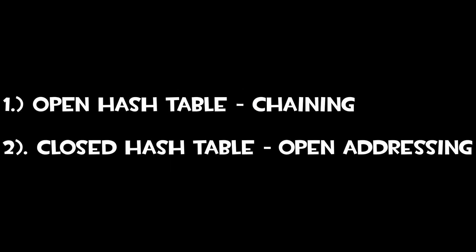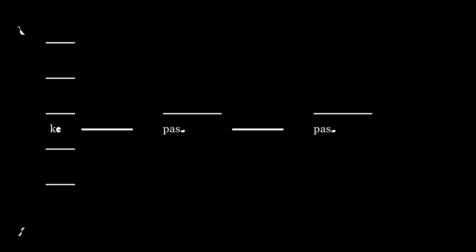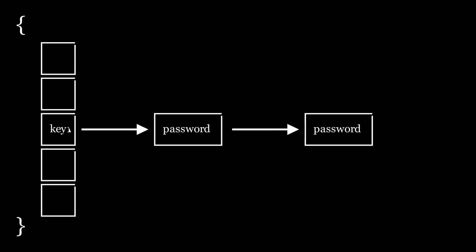There are traditionally two main ways to solve this. The first is using an open hash table, where at each entry in the hash table the key points to the head of a linked list. If you have a collision, the colliding element just gets appended to the end of the linked list. The issue is you don't know how big the linked lists could be. With many collisions you could have a linked list of size N, and part of the reason we use hash tables is their O(1) lookup time.